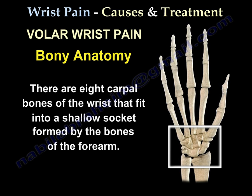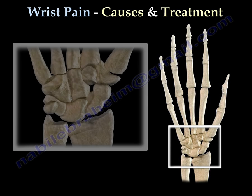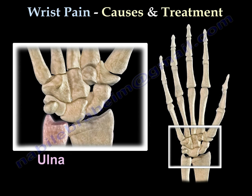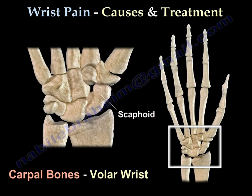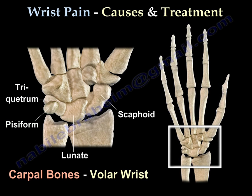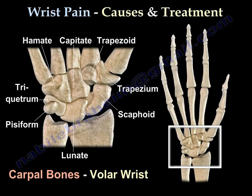There are eight carpal bones of the wrist that fit into the shallow socket formed by the bones of the forearm — the ulna and the radius. The carpal bones are: the scaphoid, the lunate, the triquetrum, the pisiform, the trapezium, the trapezoid, the capitate, and the hamate.